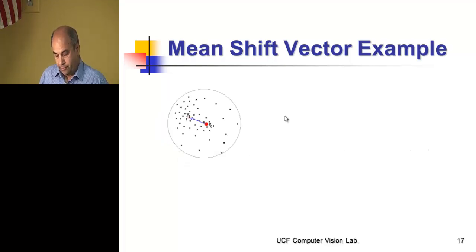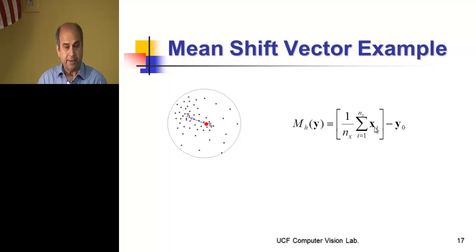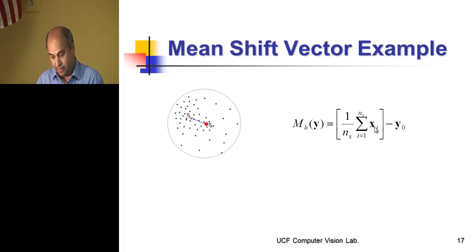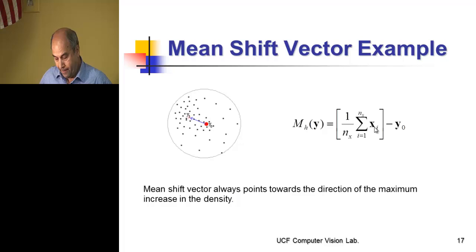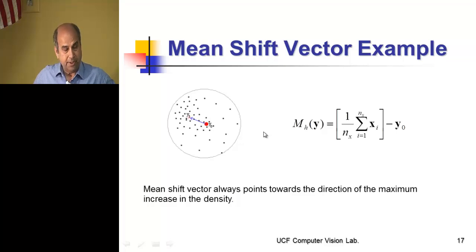Suppose this is our set of data points and a starting point. We compute the mean of the points — x1, x2, up to xn — sum them as vectors, divide by the number of points nx, and subtract the initial estimate y0. That vector is called the mean shift vector. It points toward the direction of maximum increase in density and we iterate until the vector is zero.